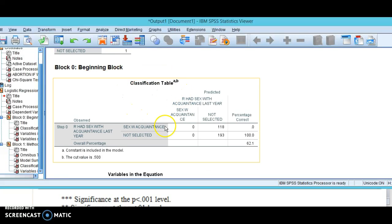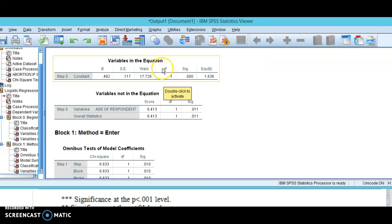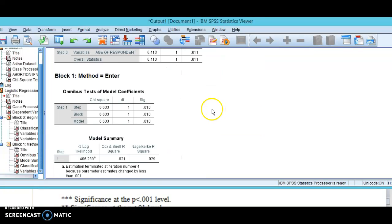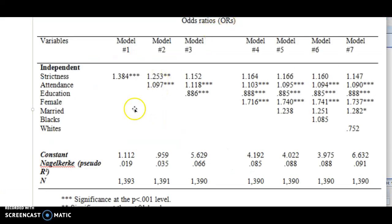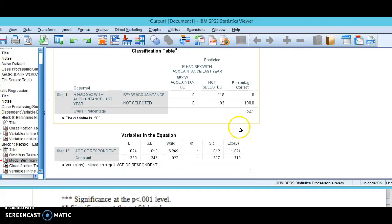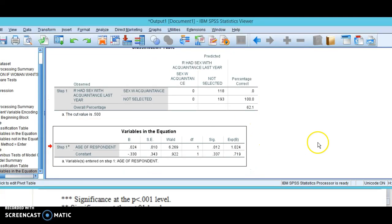Then you get a whole bunch of stuff—variables in the equation, variables not in the equation. Then you finally get a model summary. This is where you get your Nagelkirche R-squared .029. That's where that would go in this table. So you see it says Nagelkirche pseudo R-squared. That's where that number goes for the model.